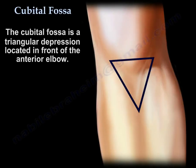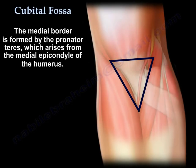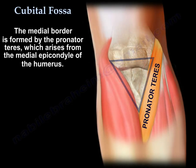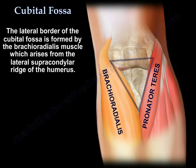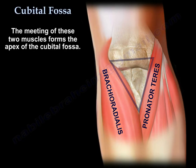The cubital fossa is a triangular depression located in front of the anterior elbow. The medial border is formed by the pronator teres, which arises from the medial epicondyle of the humerus. The lateral border is the brachioradialis muscle, which arises from the lateral supracondylar ridge of the humerus. The meeting of the two muscles forms the apex of the fossa.